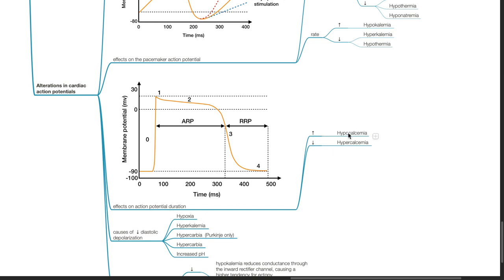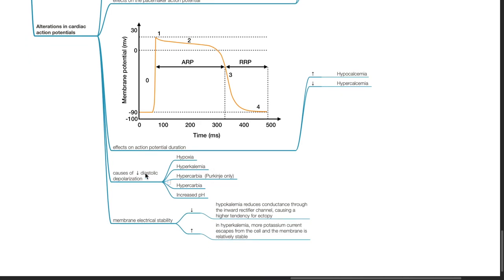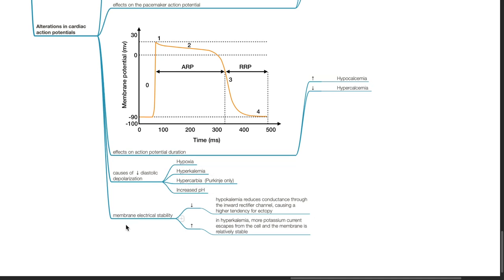Effects on action potential duration: it is increased by hypocalcemia and decreased by hypercalcemia. Causes of decreased diastolic depolarization include hypoxia, hyperkalemia, hypercarbia, and increased pH. Membrane electrical stability is decreased by hypokalemia, as it reduces conductance through the inward rectifier channel, causing a higher tendency for ectopy. Membrane electrical stability is increased by hyperkalemia, as more potassium current escapes from the cell and the membrane is relatively stable.